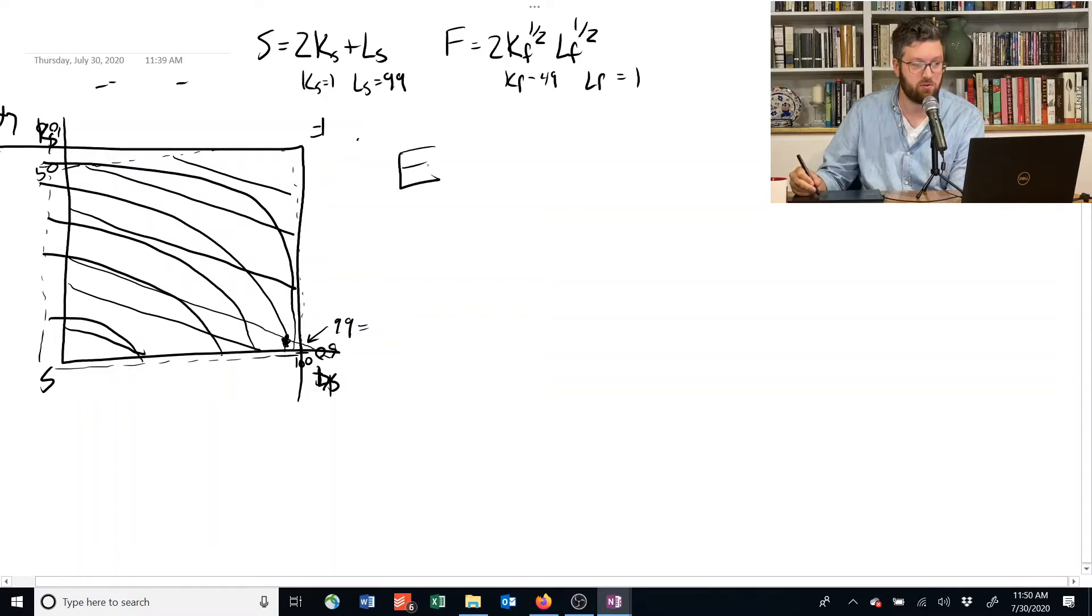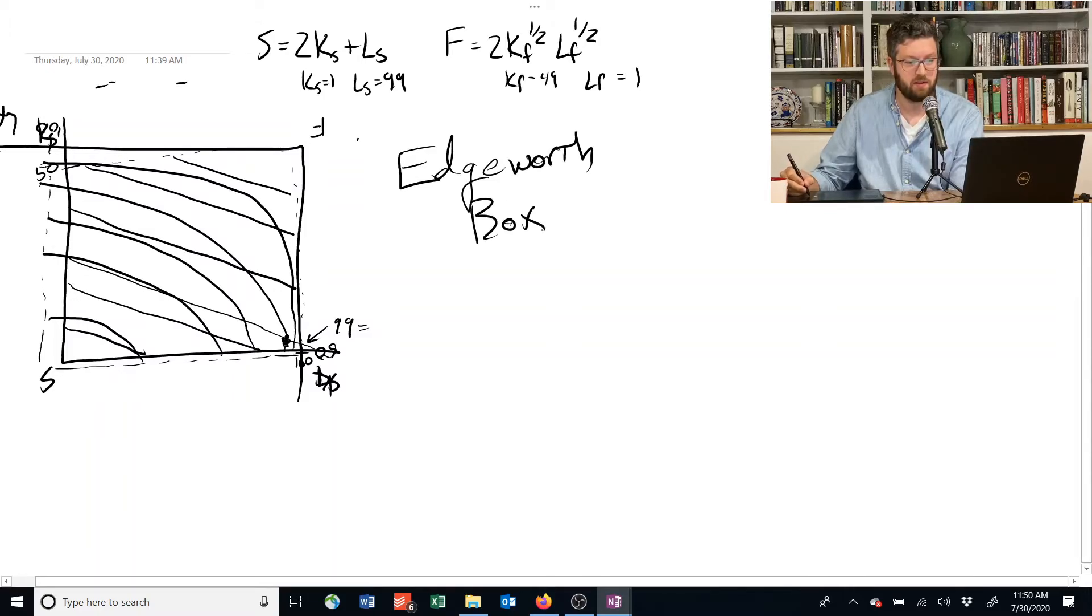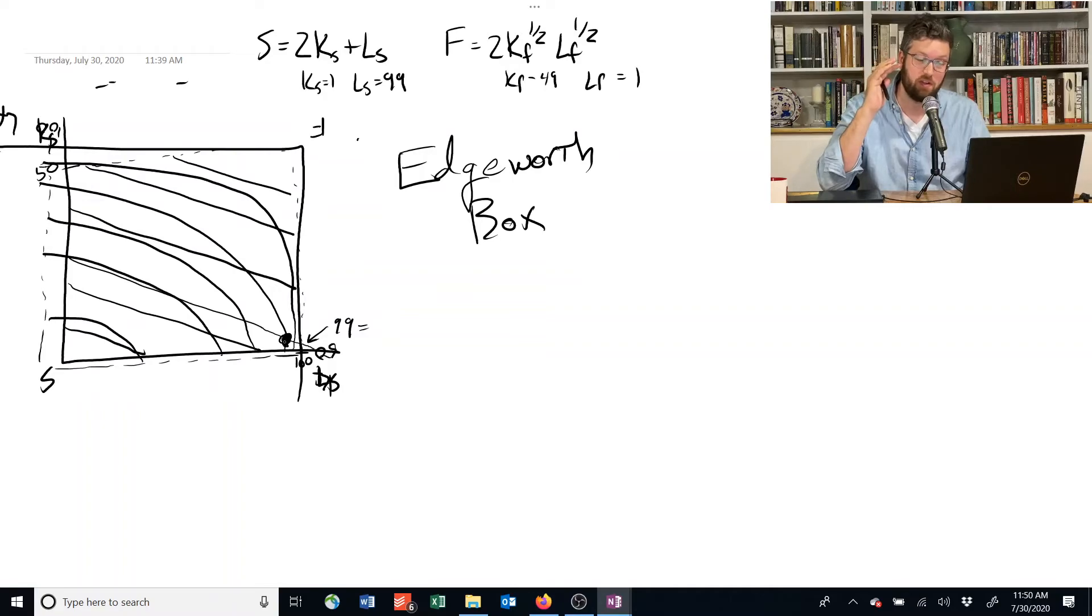This new creation is called an Edgeworth box. And it has within it all the information about the economy that you kind of need to make production decisions. This point here is telling us how much capital we're allocating to production of shelter, how much capital we're allocating to the production of food, how much labor we're allocating to one and how much labor we're allocating to the other.